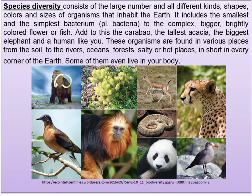Species diversity consists of the large number of different kinds, shapes, colors, and sizes of organisms that inhabit the earth. It includes the smallest and simplest bacterium to the complex, bigger, brightly colored flower or fish — the carabao, the tallest acacia, the biggest elephant, and a human like you. These organisms are found in various places, from the soil to rivers, oceans, forests, salty or hot places — in short, every corner of the earth. Some of them even live in your body.